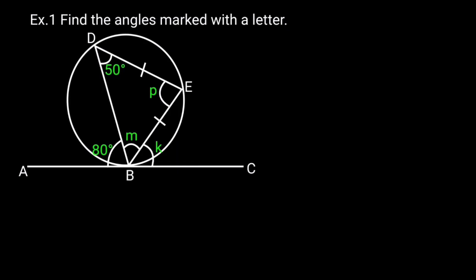Example 1: Find the angles marked with a letter. Solution: Angle DBE, which is M, equals 50 degrees. Reason: base angle of isosceles triangle.